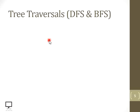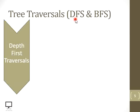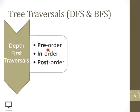A binary tree will be traversed in two main ways: the depth-first traversal technique and the breadth-first traversal technique. Under depth-first traversal, there are three sub-techniques: pre-order, in-order, and post-order. The prefix pre, in, and post refers to the position of the root node — pre means before left and right child, in-order means in between the left and right child, and post-order means after left and right child.